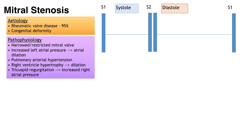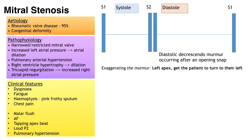Eventually the left atrium dilates due to chronic pressure and volume overload. Blood pressure in the lung vasculature rises — pulmonary arterial hypertension. With higher pulmonary artery pressure and increased pulmonary vascular resistance, the right ventricle works harder, initially hypertrophies then dilates. Back pressure from the right ventricle eventually causes tricuspid regurgitation and escalating right atrial pressure. Patients typically present with features of congestive heart failure: dyspnea, fatigue, haemoptysis or chest pain. On examination they may have a malar flush — a plum-red discolouration of the high cheeks classically associated with mitral stenosis — and atrial fibrillation with a tapping apex beat.